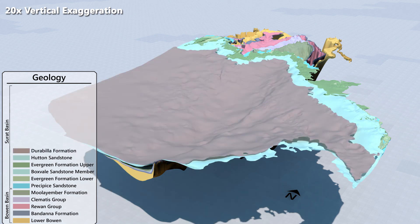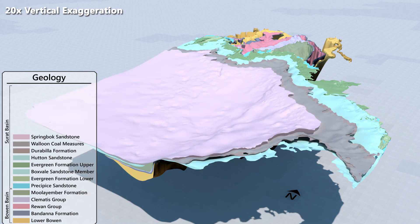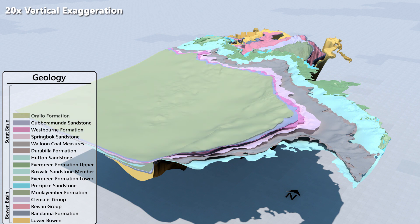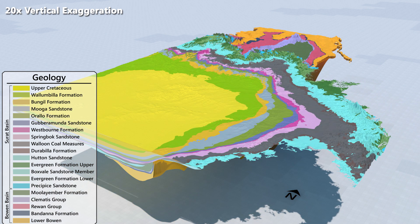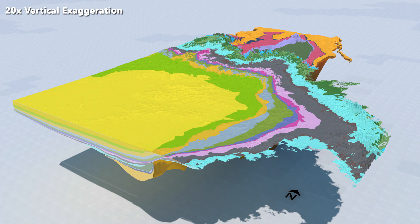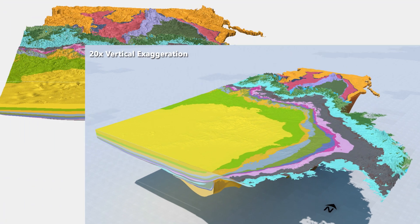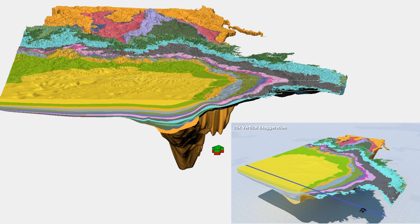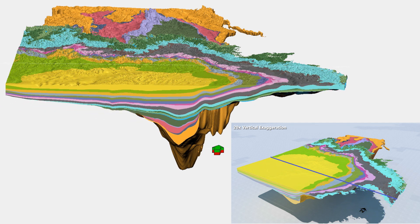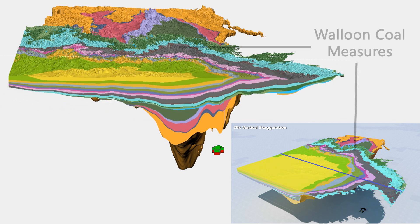The different geological formations that comprise the Surratt Basin are shown in different colours here from bottom to top, and are listed in the legend to the left. The Surratt Basin is 2.5km deep and spreads wider than the Bowen. The Surratt Basin is a mix of alternating layers of sandstone, siltstone, mudstone and coal.